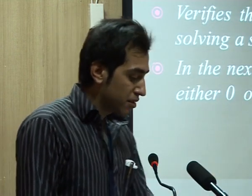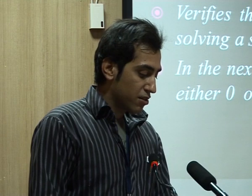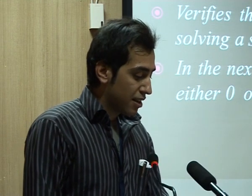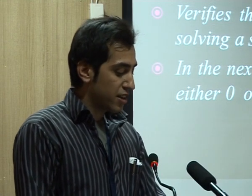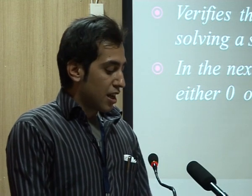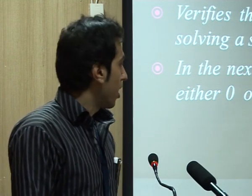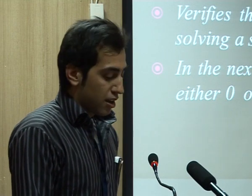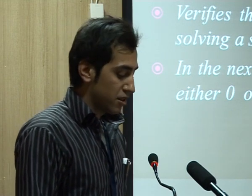The branch and bound method is based on a binary algorithm. We have one variable XI for that — it will be zero or one. If the PMU is installed at the bus, it will be one; if it is not installed, it will be zero. We have some simulation results in the next slide.